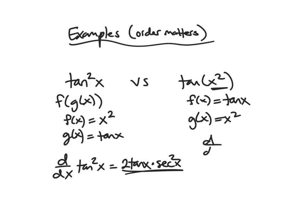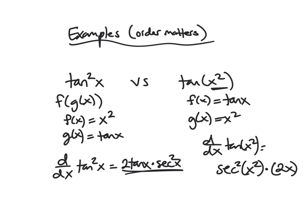For tangent of x squared, x squared is the inside g of x, and tangent is the outside. So f prime is secant squared, but we plug in the inside function, giving secant squared of x squared, times the derivative of the inside, which is 2x. So these are our two different functions, and they are indeed different.